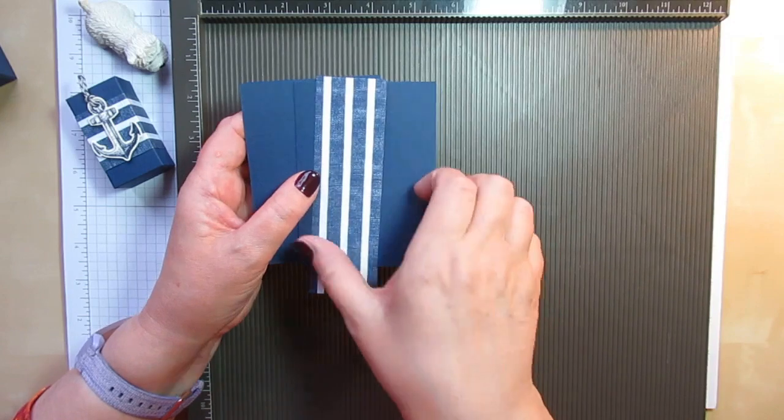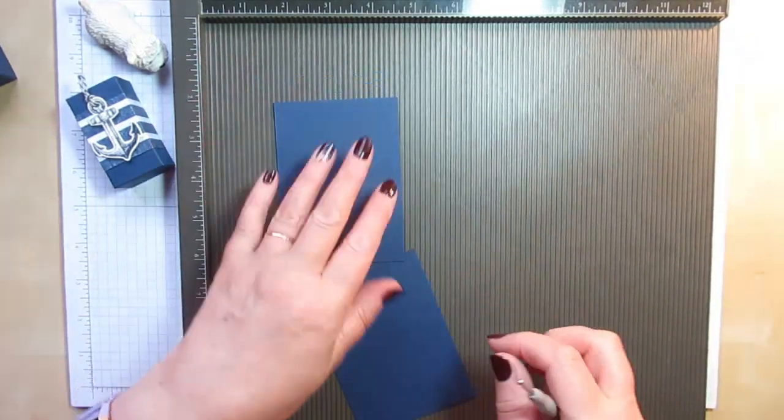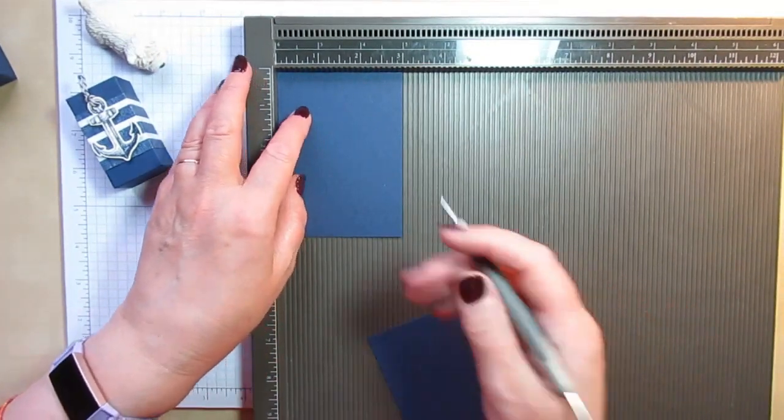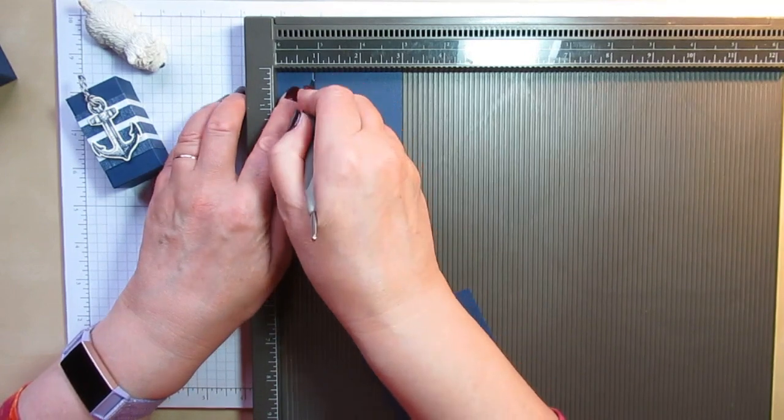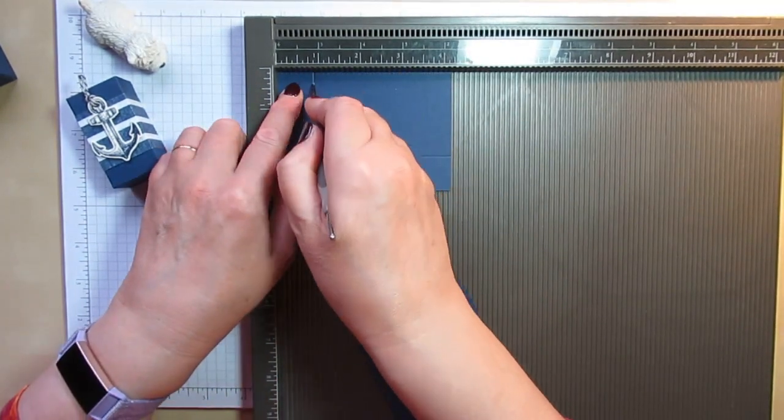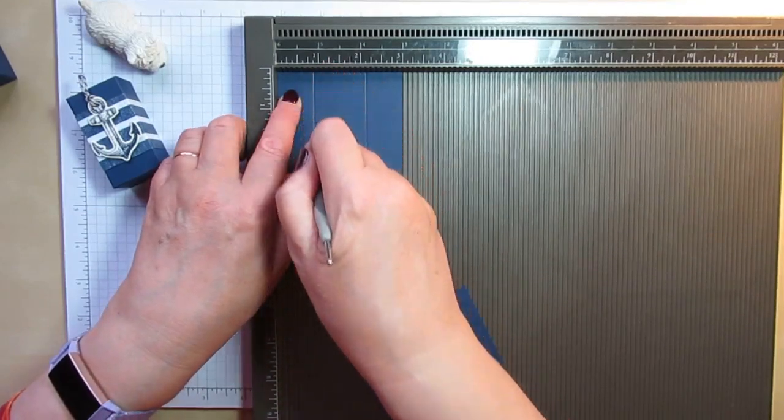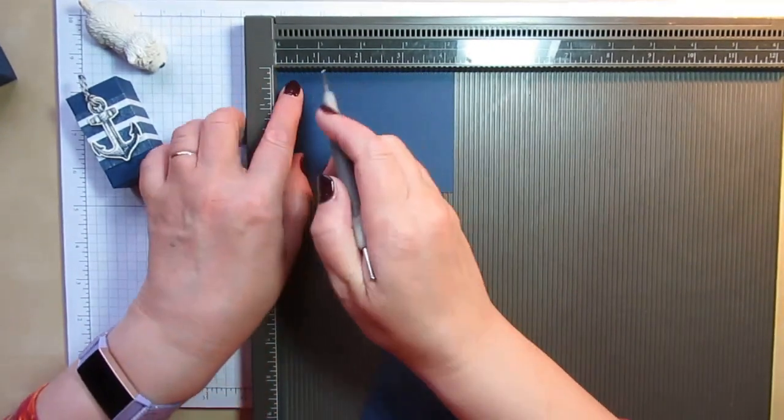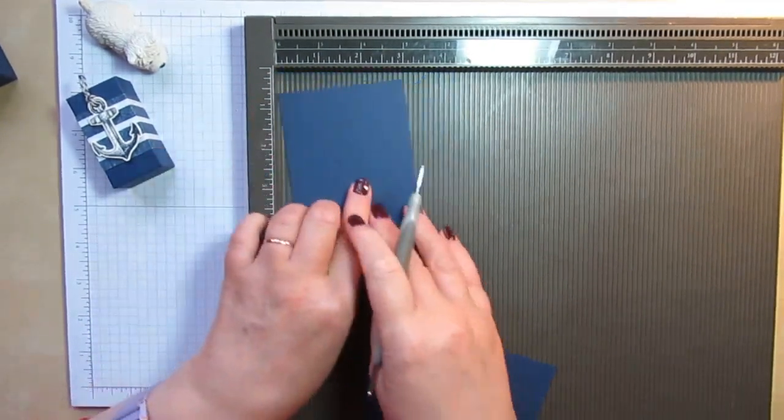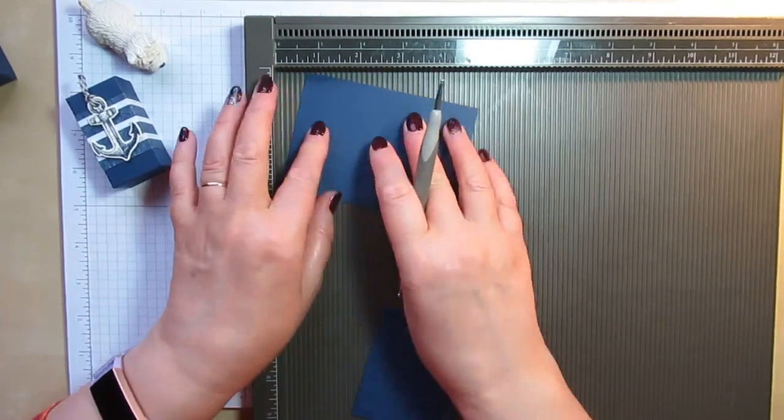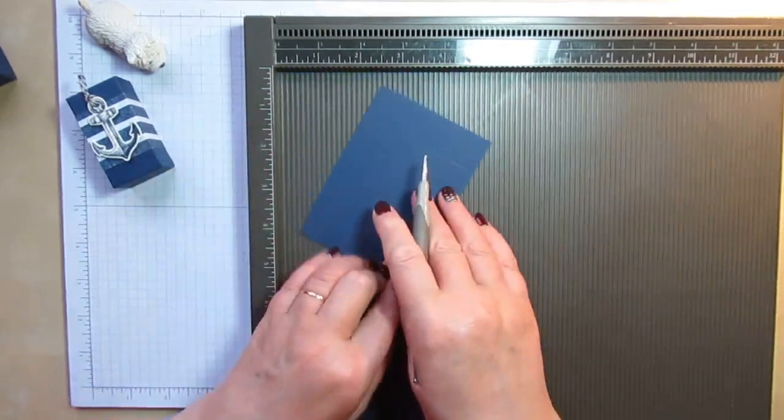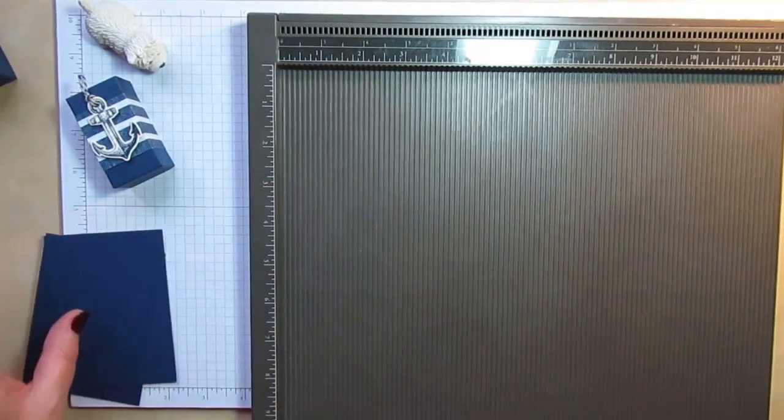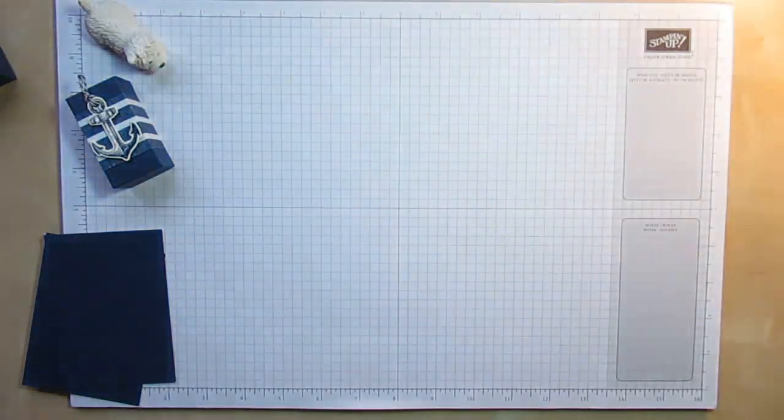And you need a piece of this gorgeous designer series paper which measures 1 and 1/2 inches by 5 inches for the belly band. Pop your cardstock on your scoring board and you're going to score both pieces at 7/8 of an inch on all four sides. So it's quite an easy one to remember in terms of the scoring. All four sides on that piece and 7/8 on all four sides on this piece as well. And that's all your scoring done.